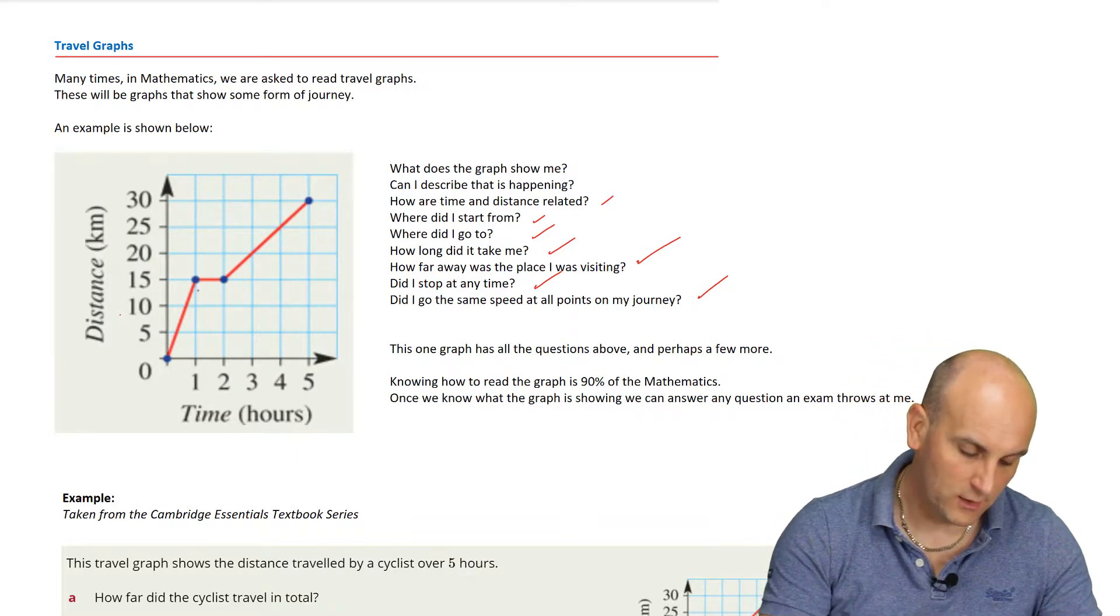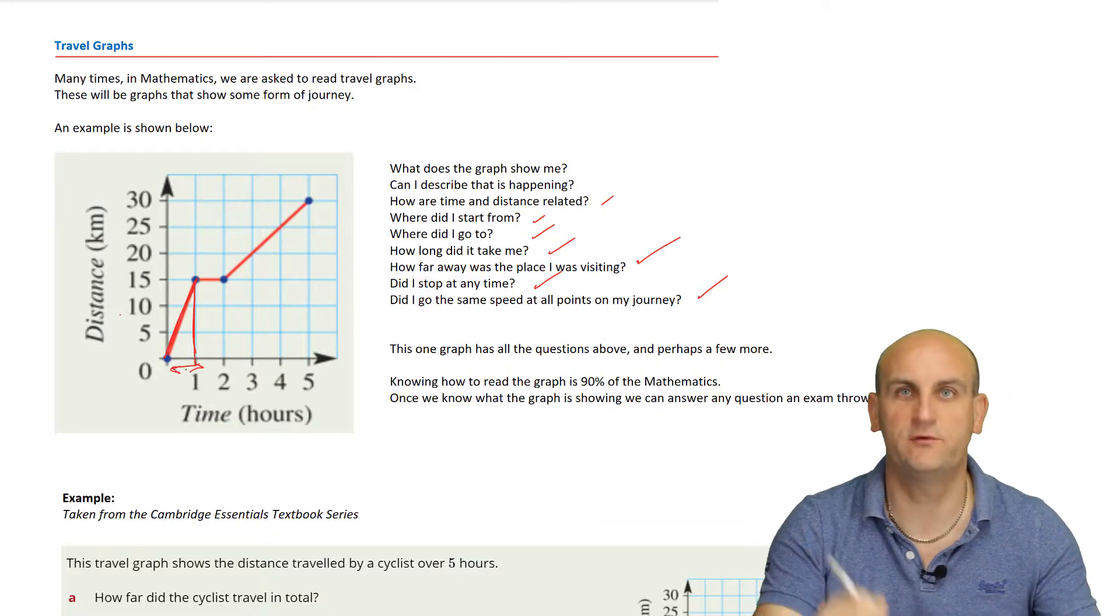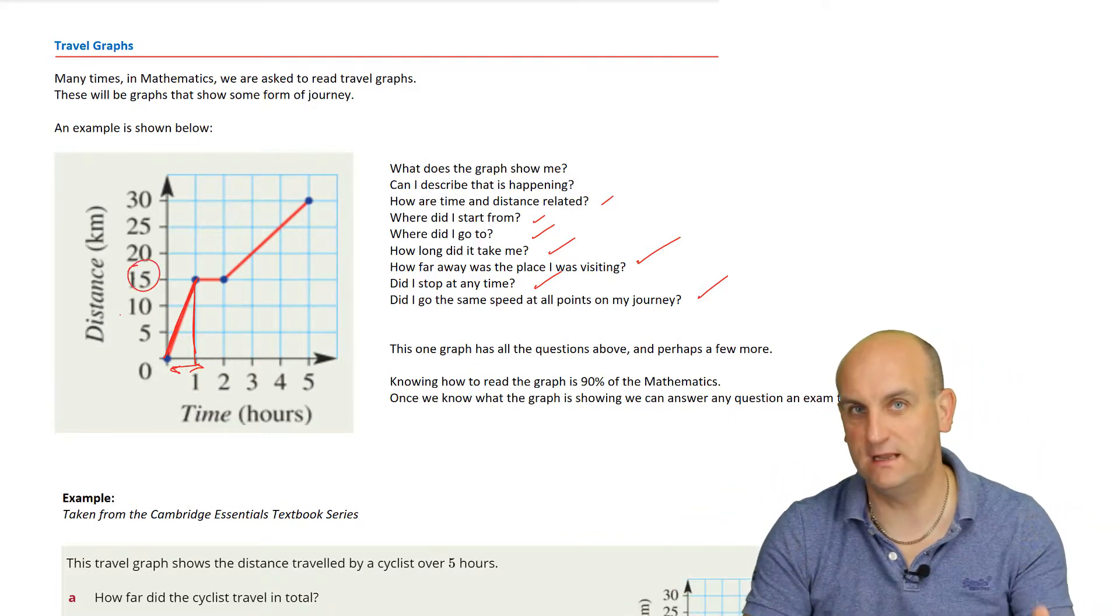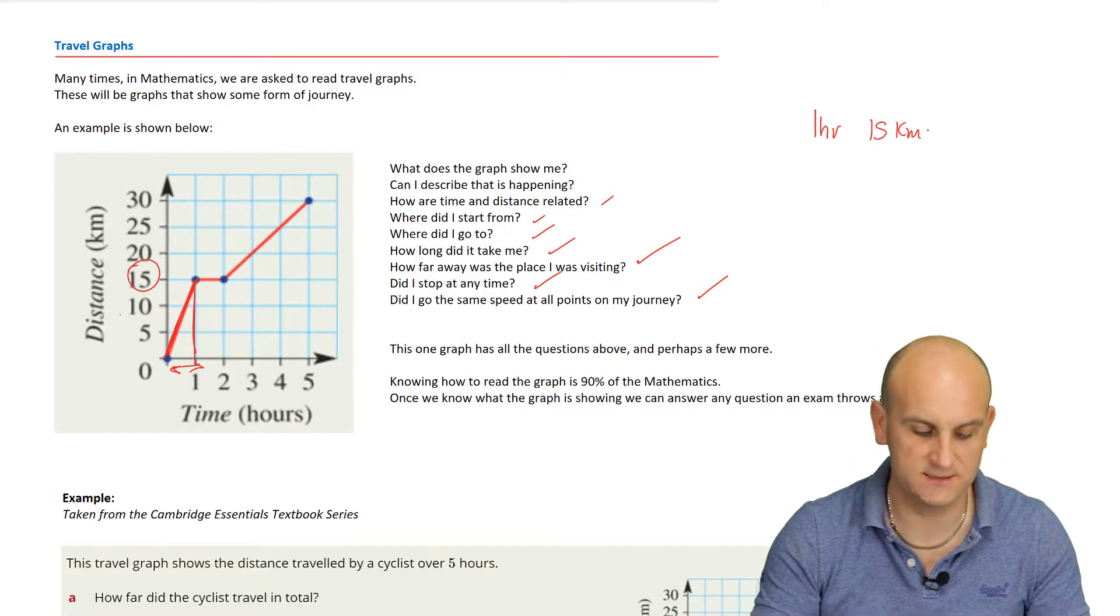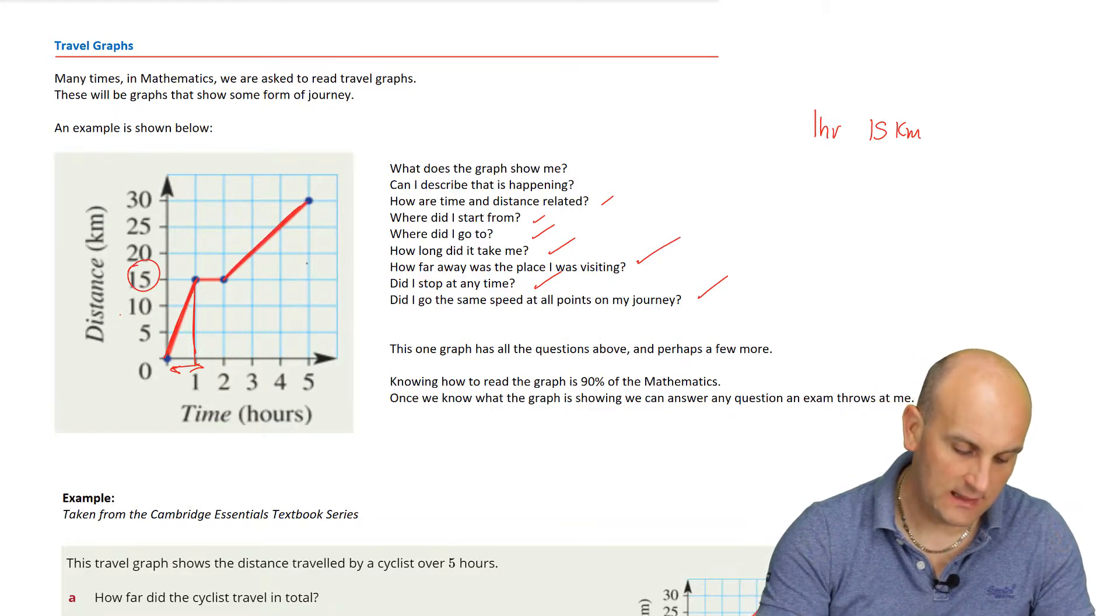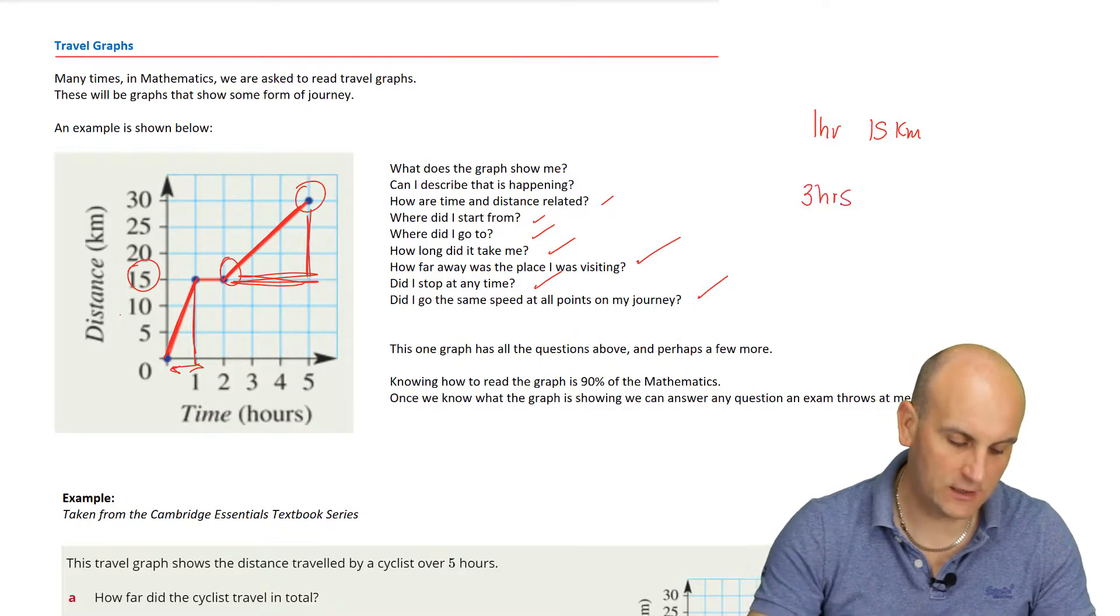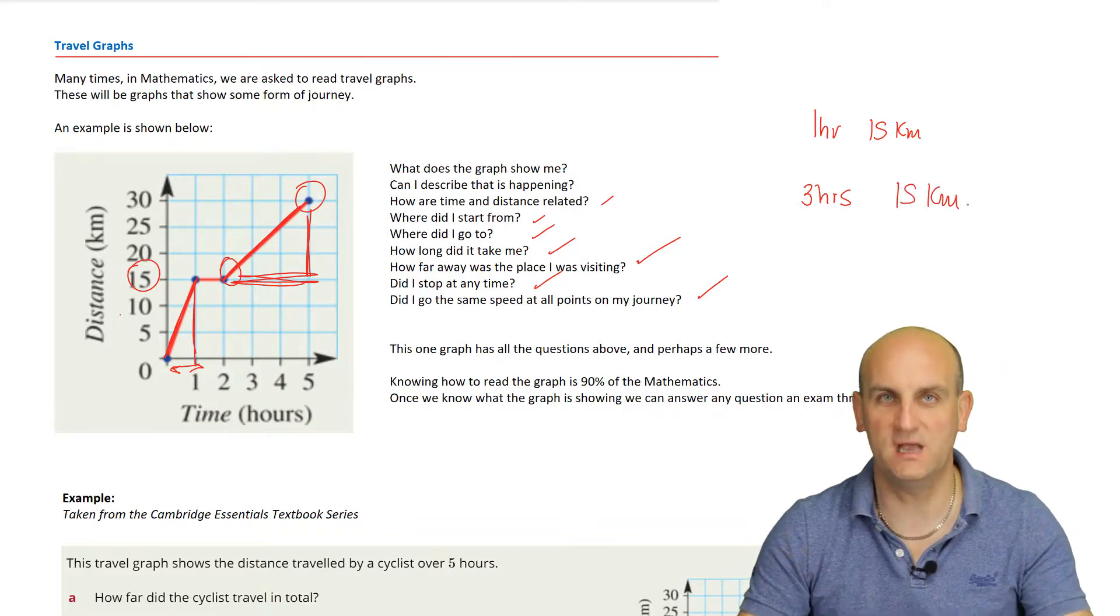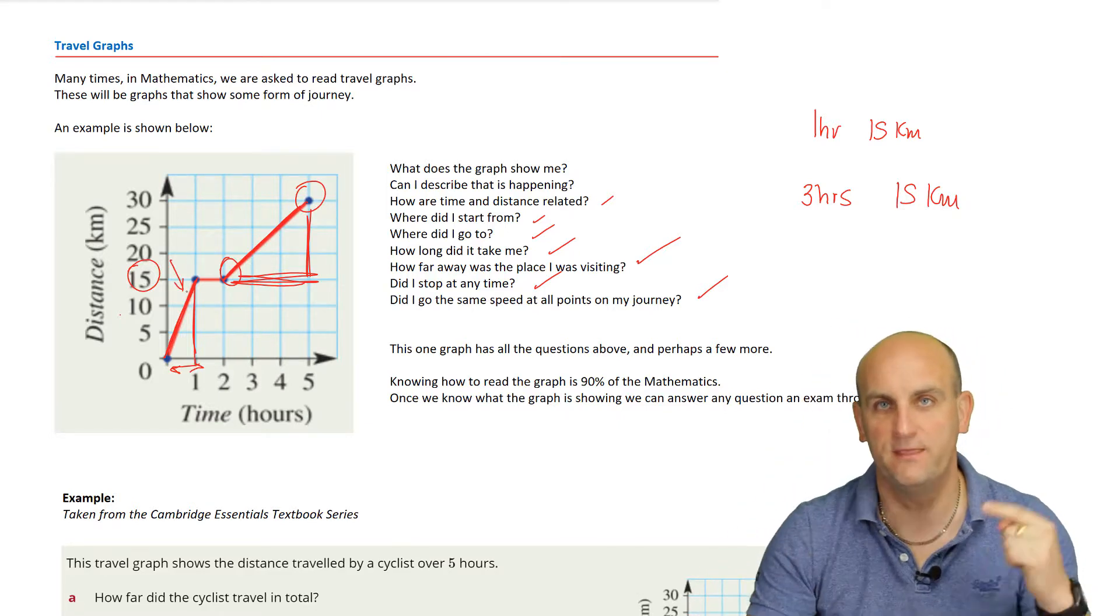And how do we know that? Well, look at this section of line here. Look at this first section of line here. How long did it take me to travel between those two blue points? One hour. How far did I travel? I travelled 15 kilometres. So in that one hour, I travelled 15 kilometres. Now look at this second section here. Looking at this triangle a bit from my start to my end. How long did it take me? It took me three hours. And how many kilometres did I travel? I travelled 15 kilometres. So I must have been going faster in this first section. So the steeper the line, the faster I go.